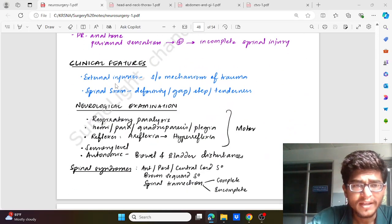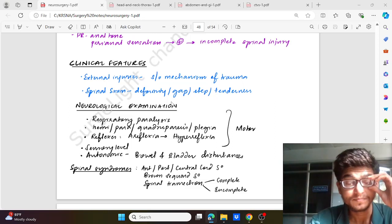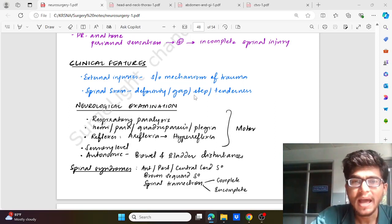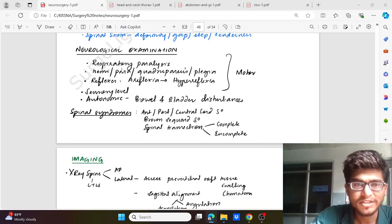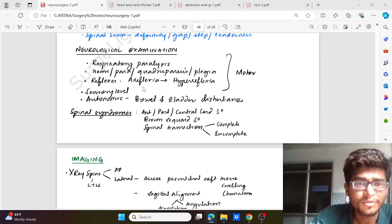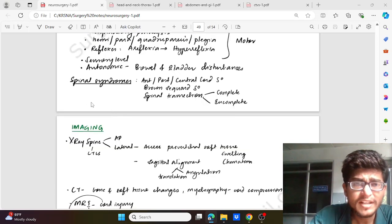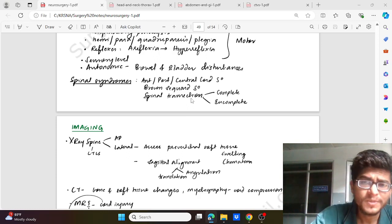Clinical features: you have to examine the external injury which will be suggestive for the mechanism of trauma. Then spinal exam, which will give us about the deformity, gap step or tenderness. Neurological examination which will help us in assessing paralysis, respiratory paralysis, hemiparesis, quadriparesis or plegia, reflexes which could be either areflexia or hyperreflexia - these are some of the motor findings in the neurological examination. Then we have the sensory level examination, autonomic functions like the bladder and the bowel function, various spinal syndromes like the anterior, posterior, central spinal cord syndrome, Brown-Sequard syndrome, spinal transection syndrome which could be complete or incomplete.